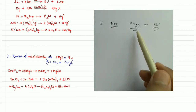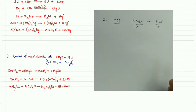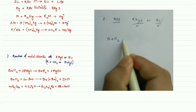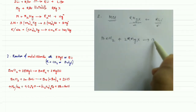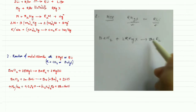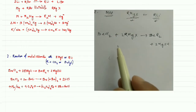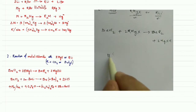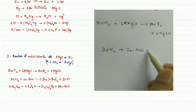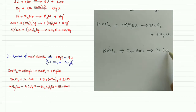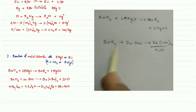In the second method, some organometallic compounds of main group elements can be prepared. For example, barium chloride can react with RMgX to give BeR₂ along with MgXCl. Also, barium chloride can react with RLi to give BeR₂ plus lithium chloride. So these organometallic compounds can be prepared using the second method.